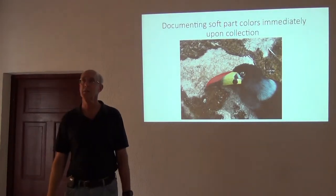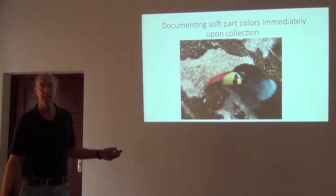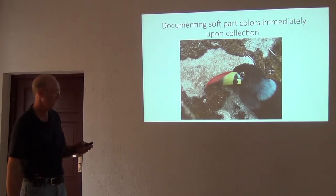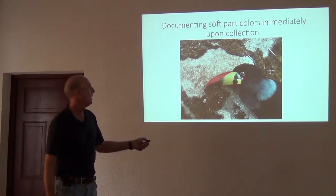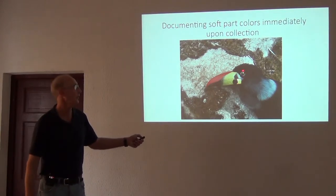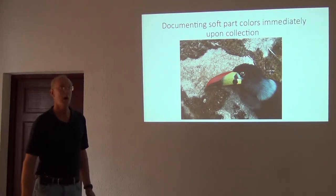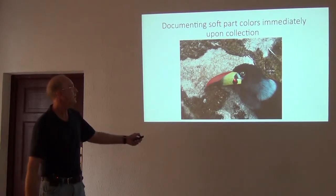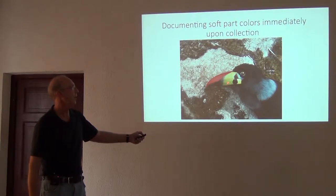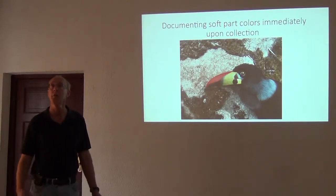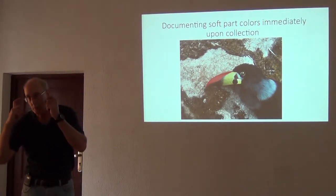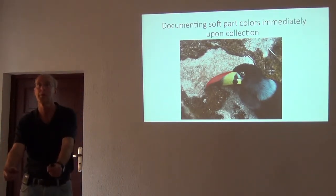When we're using shotguns, quickly after death on many species — this is a mountain toucan from the Andes of South America — these soft part colors rapidly change. The iris will often change colors within 15 to 20 minutes. If I showed you a photograph of this specimen later on, you would have lost all this yellow and red and it would have become quite dull. So if we collect a bird with a shotgun, we take cameras and document those soft part colors immediately.